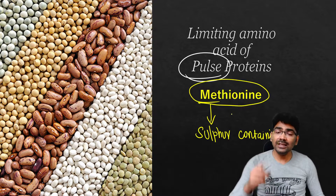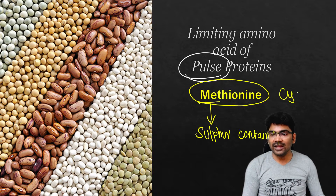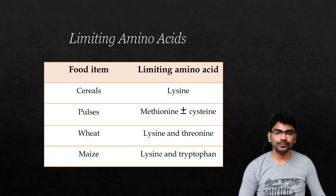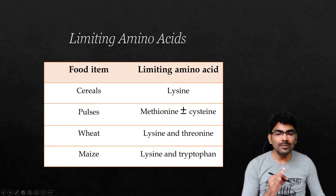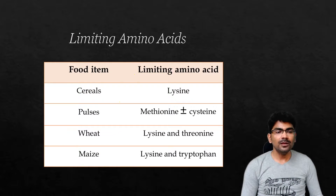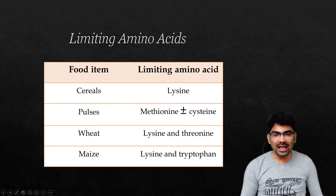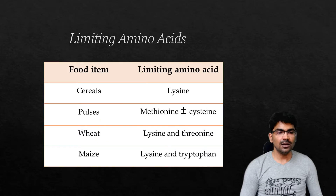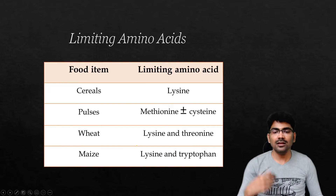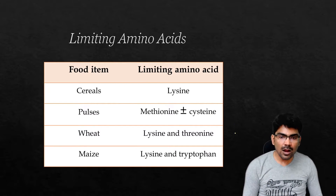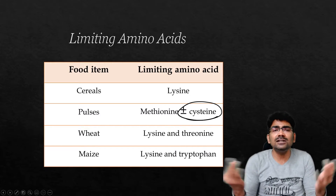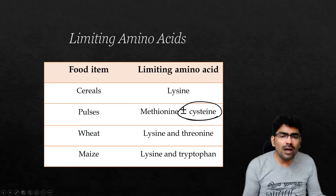Methionine is an essential amino acid, whereas cysteine is dietarily non-essential. Cereals lack lysine and pulses generally lack methionine. Pulses may also lack cysteine, but cysteine is dietarily non-essential — we can synthesize cysteine.